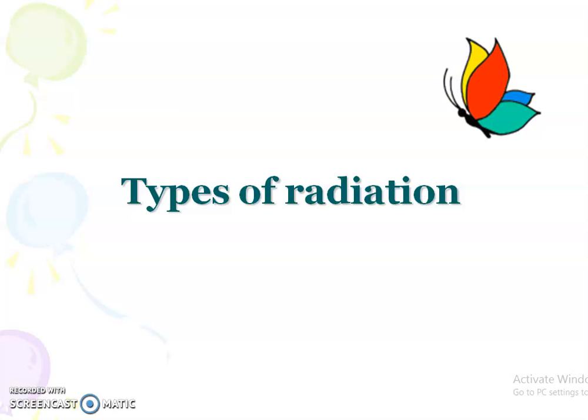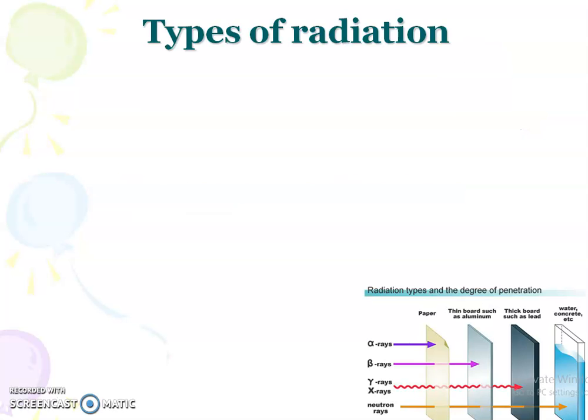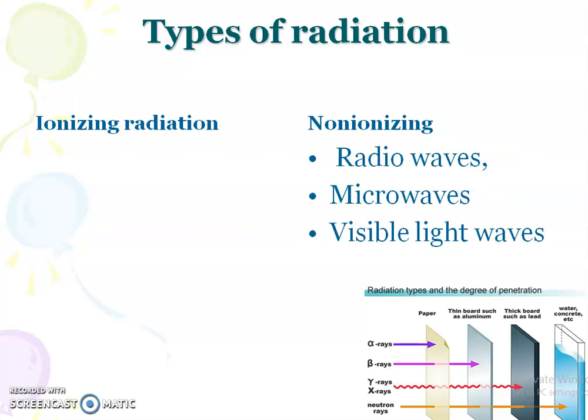Let us discuss the types of radiations used in radiation therapy. Radiation is mainly classified into two groups: ionizing radiation and non-ionizing radiation. Non-ionizing radiation includes radio waves, microwaves, and visible light waves. This non-ionizing radiation is not used in radiation therapy. So we will move on to the next category: ionizing radiation.